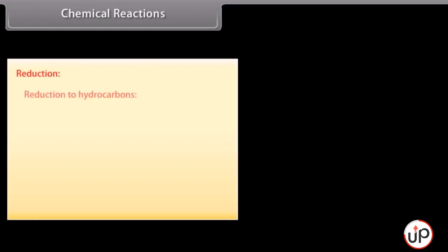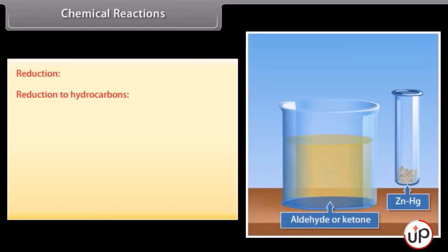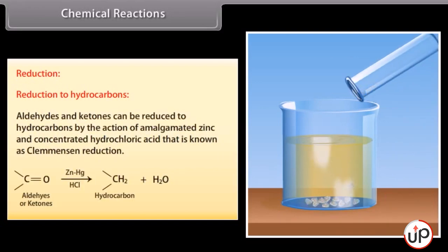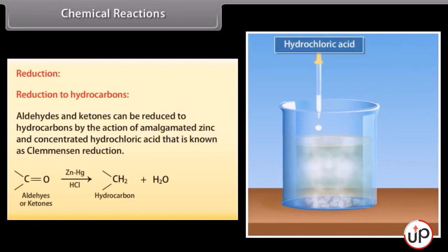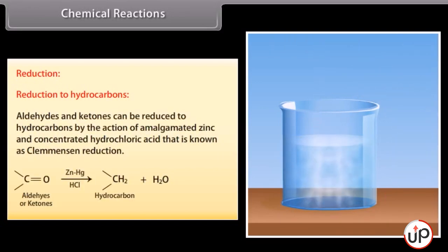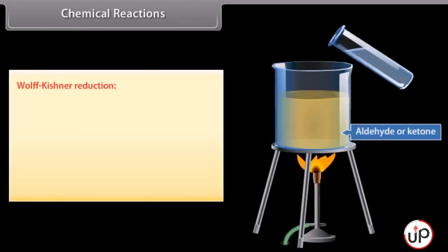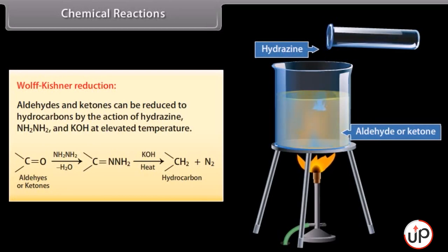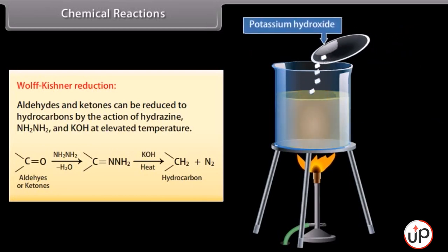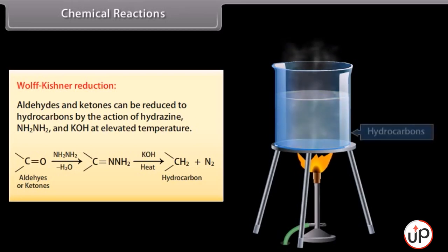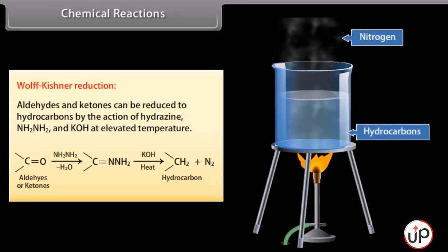Reduction to hydrocarbons: aldehydes and ketones can be reduced to hydrocarbons by the action of amalgamated zinc and concentrated hydrochloric acid, which is known as Clemmensen reduction. Wolff-Kishner reduction: aldehydes and ketones can also be reduced to hydrocarbons by the action of hydrazine and potassium hydroxide at elevated temperature.